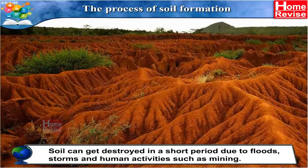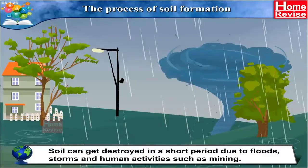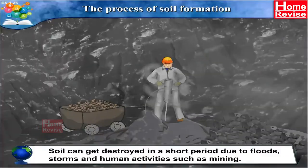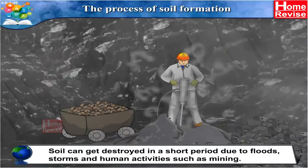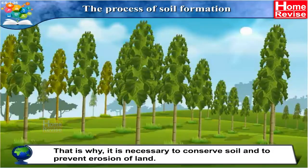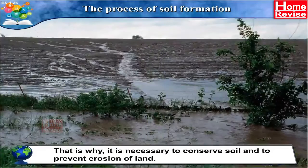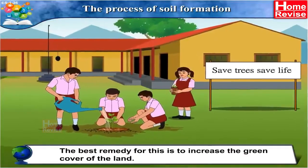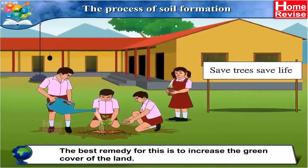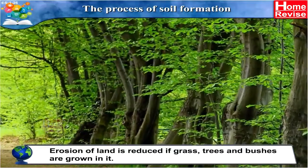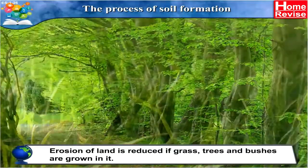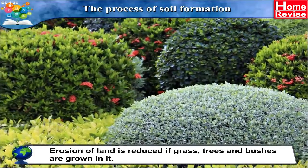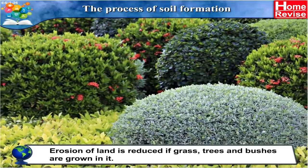Soil can get destroyed in a short period due to floods, storms and human activities such as mining. That is why it is necessary to conserve soil and to prevent erosion of land. The best remedy is to increase the green cover of the land — erosion is reduced if grass, trees and bushes are grown on it.